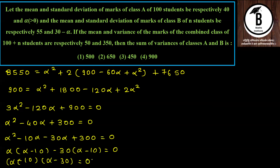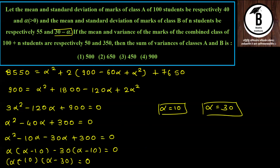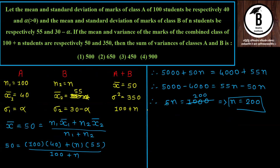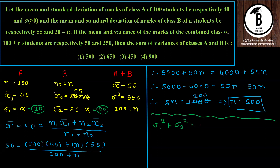Factoring α² − 40α + 300 = 0: (α − 10)(α − 30) = 0, so α = 10 or α = 30. However, α = 30 is not possible because 30 − 30 = 0, making the standard deviation of class B zero. Therefore α = 10. Putting the values: σ₁ = 10, σ₂ = 30 − 10 = 20.